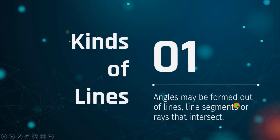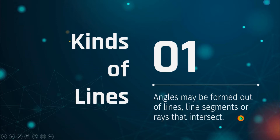Before we start, it is very important that we all should know the different kinds of lines, because angles are formed out of those lines — or they may be formed out of two line segments or rays that intersect with each other.